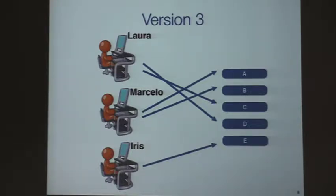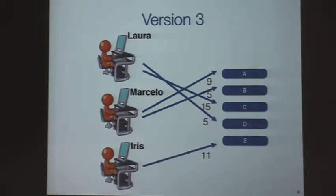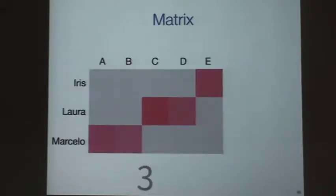We don't know the force of the contribution of the authors to the classes. To give more information about these relationships, this is practically a graph — a group of developers and a group of classes — and we can say a developer modified 11 lines of code or a number of methods at class E. Another way to see this is with a matrix.